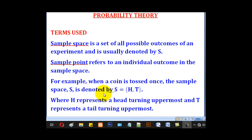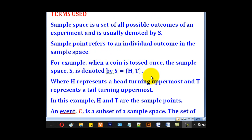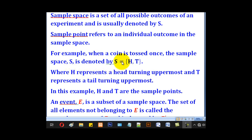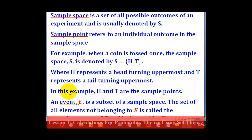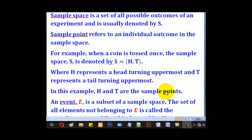There are some terms you need to know under this tutorial. One is sample space — a set of all possible outcomes of an experiment, usually denoted by capital S. Sample point refers to the individual outcome in the sample space. For example, when a coin is tossed once, the sample space S is denoted by head or tail, where H represents a head turning uppermost and T represents a tail turning uppermost. In this case, H and T are the sample points.